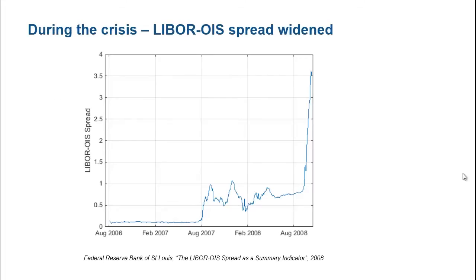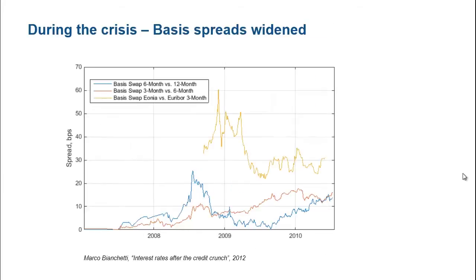During the crisis, the spread between LIBOR and overnight rates such as OIS based on Fed funds widened. From a Federal Reserve paper, you can see that the LIBOR-OIS spread widened substantially during the crisis, indicating market perceptions of LIBOR as being riskier than Fed fund rates. Similarly, the spread between LIBOR rates of different maturities widened as well, indicating a perceived risk in lending for longer durations.